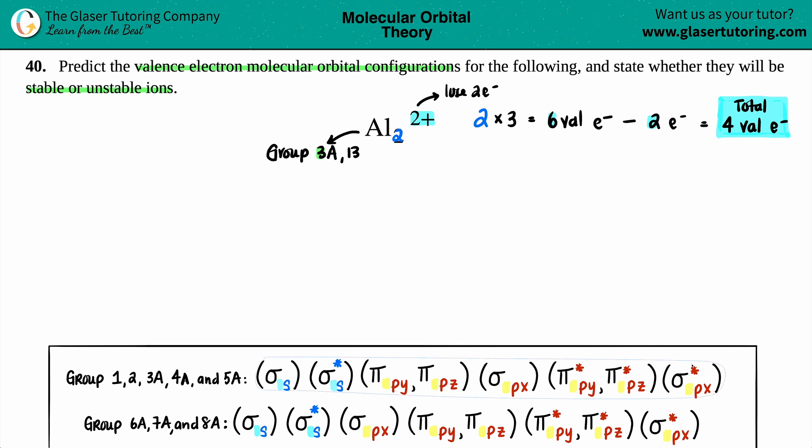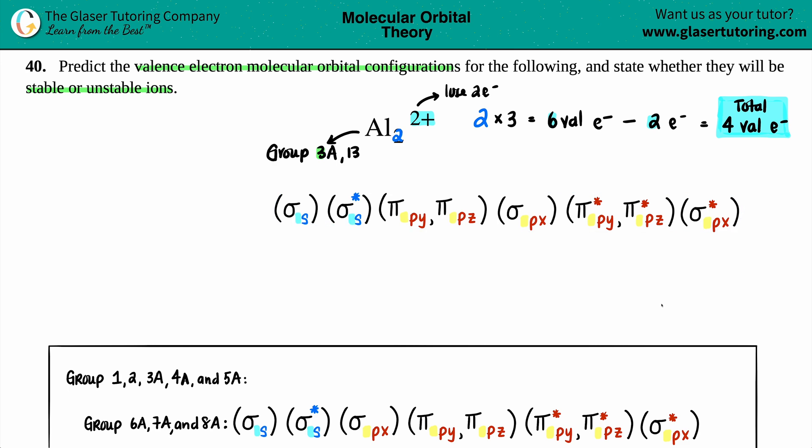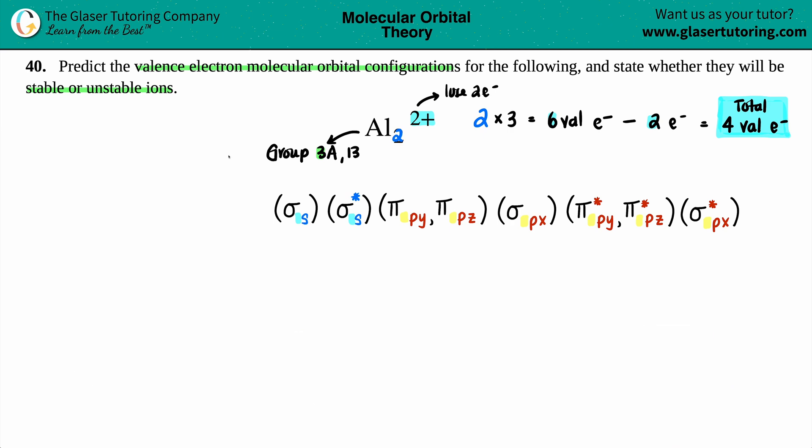So I'm going to pull this upward. And if you want to pause the video to write down the other generic valence electron molecular orbital diagram, go for it. But I'm just going to get rid of it just so that we have more space here. And now I can say that this is going to be Al₂²⁺ its molecular orbital configuration.